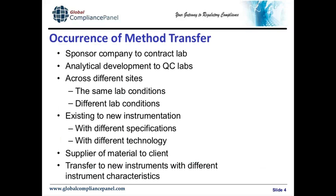Now the next topic: we will give you some examples where a controlled method transfer is necessary and required. For example, these include the transfer of methods from a pharmaceutical company to a regulatory agency, because sometimes the agency asks for samples and wants to analyze them. They don't need to develop the method or validate it — they just would like to get information on how to transfer the method and what to do to make sure they can run it suitably in their own laboratory. Another example would be a method transfer from a sponsor company to a contract laboratory, or vice versa, and also from an analytical development laboratory to quality control laboratories — which may be the most important example.